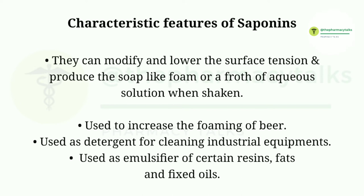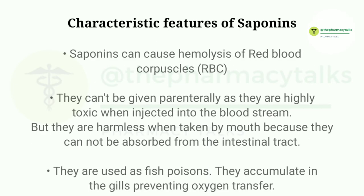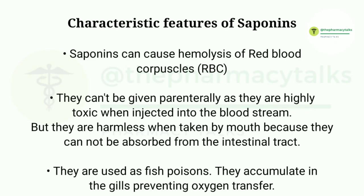They are used to increase the foaming of beer, used as detergent for cleaning industrial equipment, and used as emulsifier of certain resins, fats, and fixed oils. Saponins can cause hemolysis of red blood corpuscles.